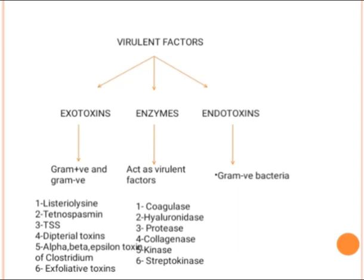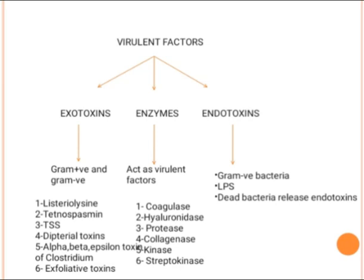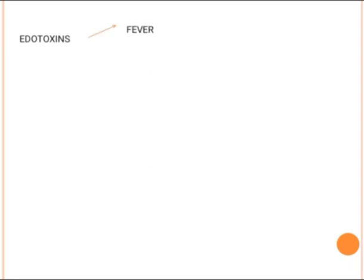A very important virulence factor is endotoxins, which are specifically present in gram-negative bacteria — unlike exotoxins, which occur in both gram-positive and gram-negative. Endotoxins are present in the form of LPS, and when bacteria die they release these endotoxins. Endotoxins can cause sudden death. They cause fever and endotoxin shock.